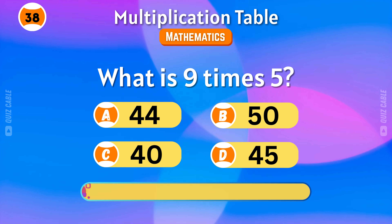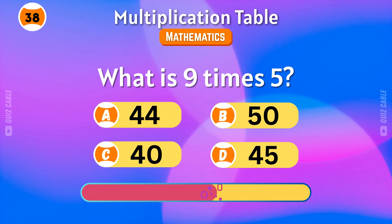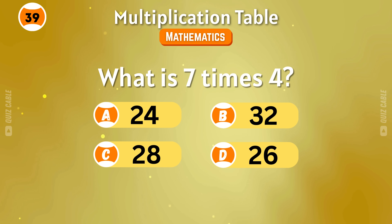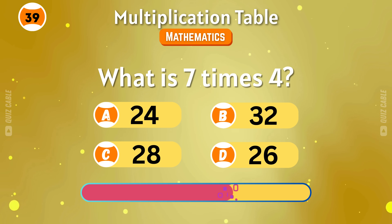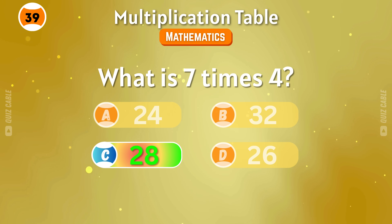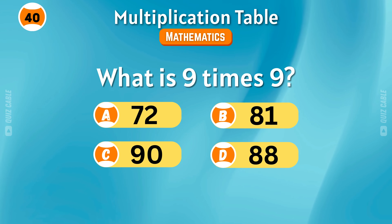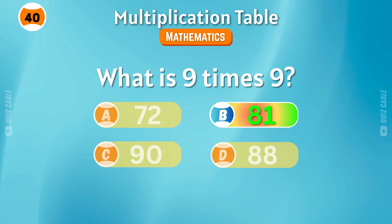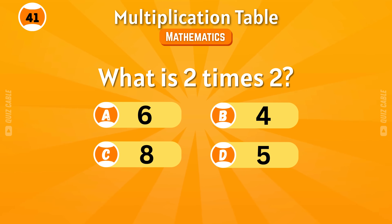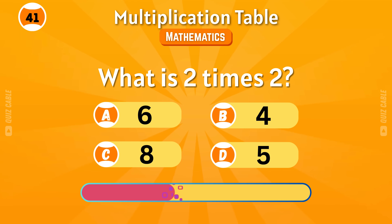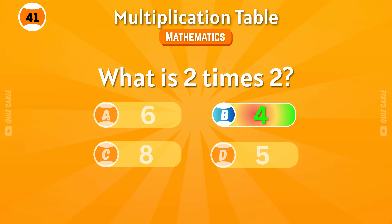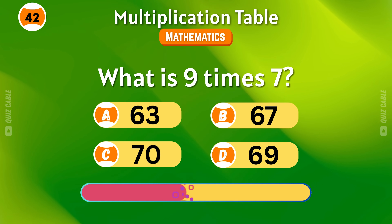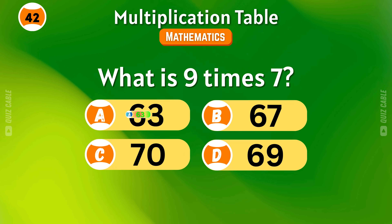What is nine times five? Forty-five. What is seven times four? Twenty-eight. What is nine times nine? Eighty-one. What is two times two? Four. What is nine times seven? Sixty-three.